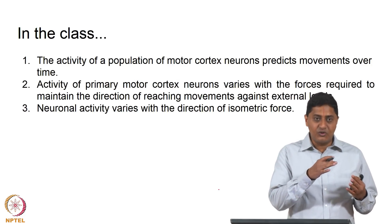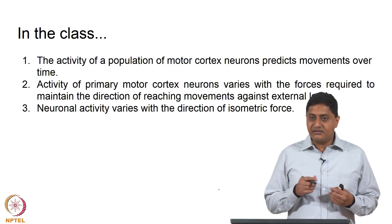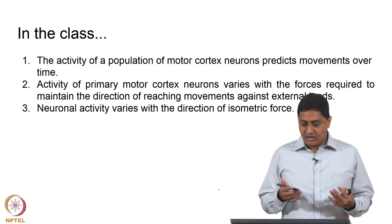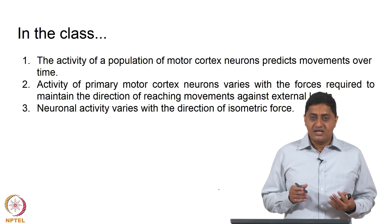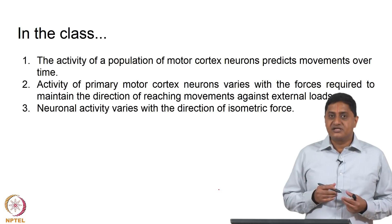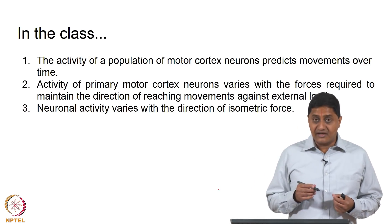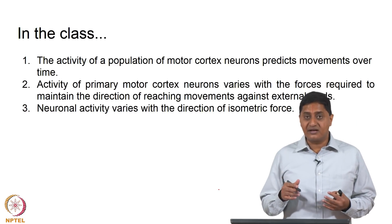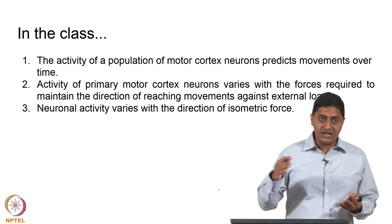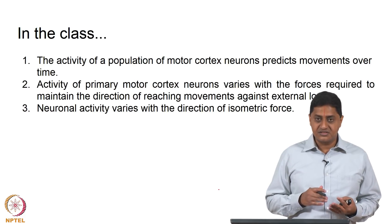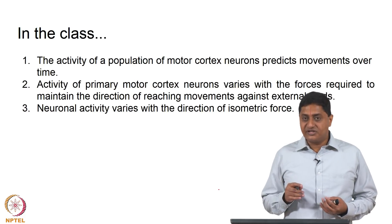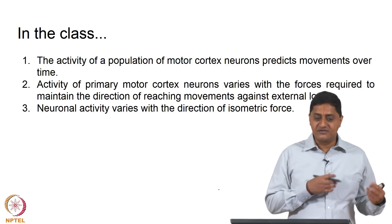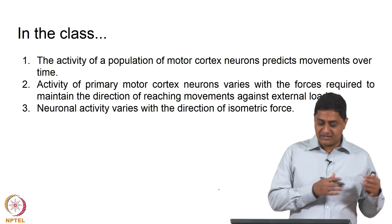If I am recording from a whole bunch of neurons, depending on their population activity — the overall activity of all these neurons — I can predict the direction in which the monkey is going to move. Each neuron has a directional tuning curve or preferred direction, and summing all activities gives an approximate prediction of movement direction. This is the work of Georgopoulos discussed in the previous class.